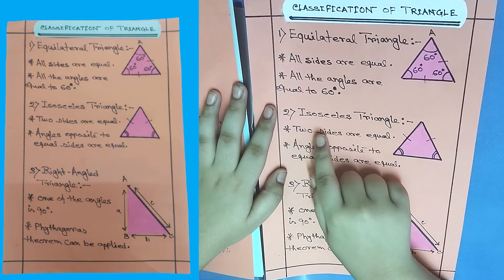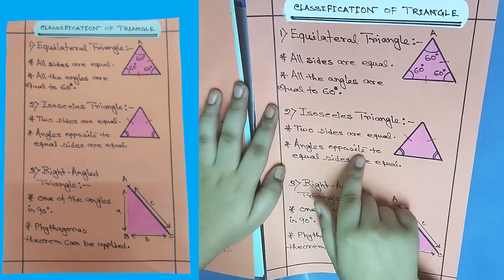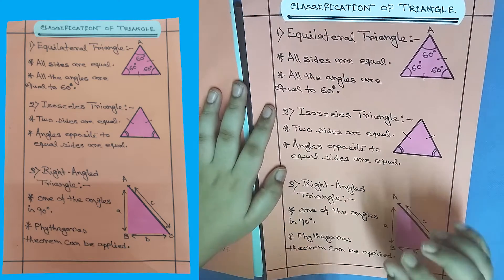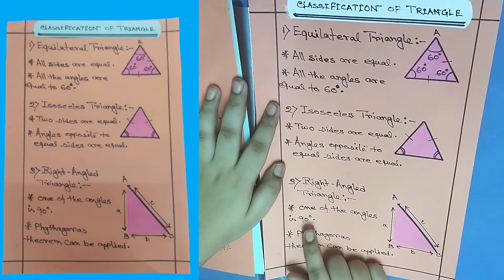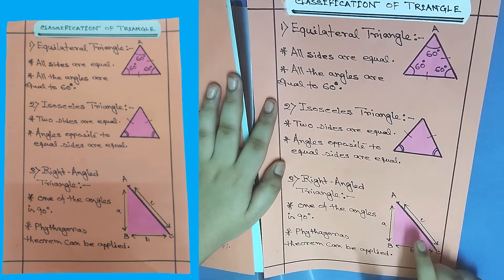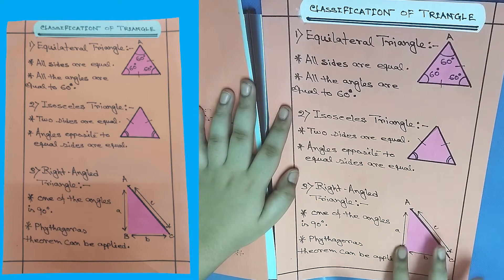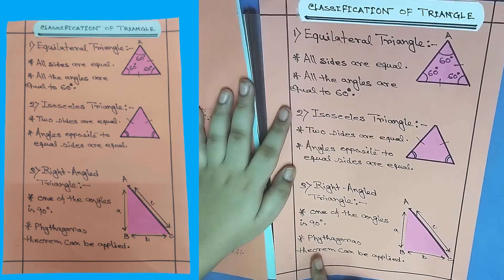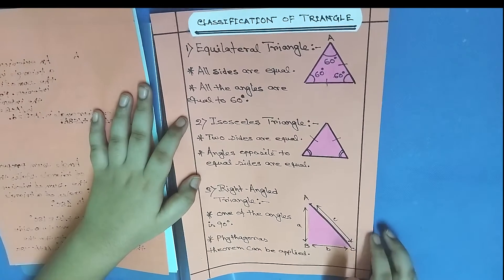Number two: isosceles triangle — two sides are equal and the angles opposite to the equal sides are also equal. Number three: right angle triangle — one of the angles is 90 degrees. It looks like an L shape, so that means it's 90 degrees. The Pythagorean theorem can be applied to a right angle triangle.